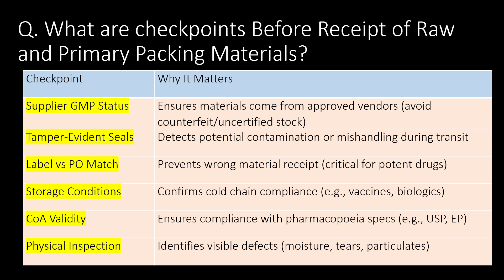What are checkpoints before receipt of raw and primary packing materials? Supplier GMP status, tamper-evident seals, label vs. PO match, storage conditions, COA validity, and physical inspection are the key checkpoints before receipt of raw and primary packing materials.